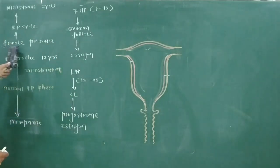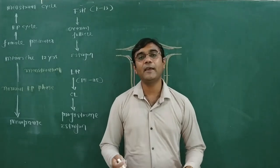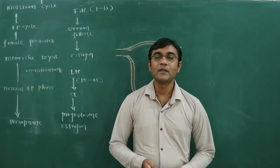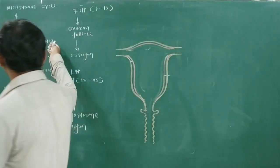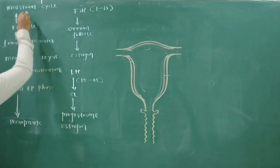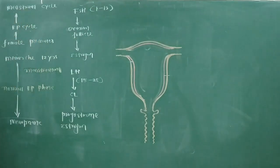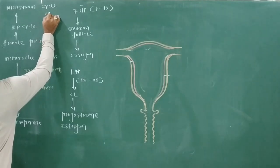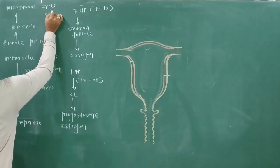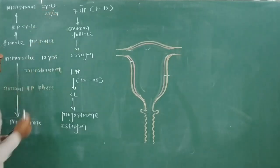Female primates — examples include monkey, apes, and humans. In these animals, the reproductive cycle that runs is the menstruation cycle. This menstruation cycle is repeated every 28 to 29 days.